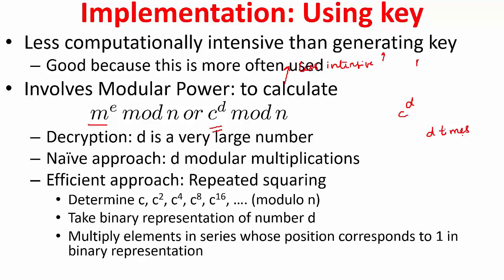Well, this approach—the efficient approach—is called repeated squaring, where you determine c, c square, c to power of 4, c to power of 8, c to power of 16, so on, all in modular n. And you take the binary representation of this number d and multiply only those c's whose positions correspond to 1 in the binary representation.